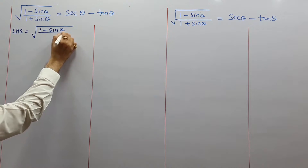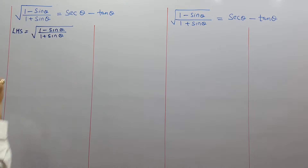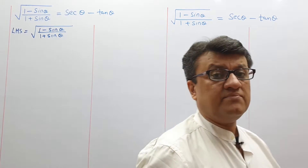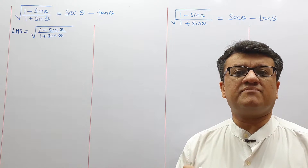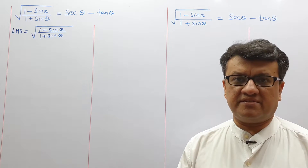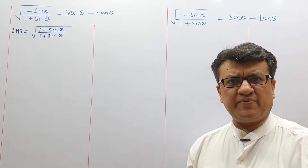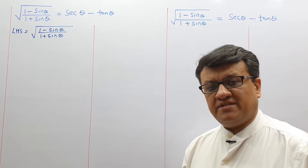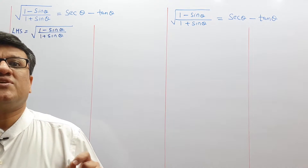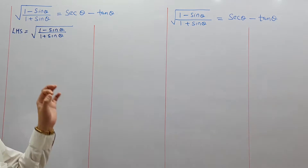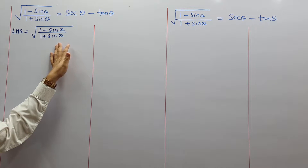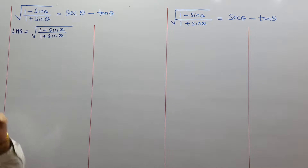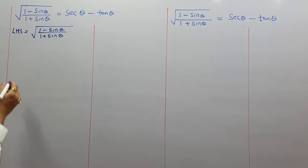What makes this sum unique is the root sign involved — a radical being involved. The LHS has a root sign and the RHS doesn't, so this is a root to non-root sum. In class 9 you studied rationalization — rationalizing the denominator. Whenever we have a binomial surd, we rationalize with its conjugate. The denominator is 1 + sinθ, so its conjugate is 1 - sinθ. Whenever we have a root sum, we always multiply by the conjugate and rationalize.